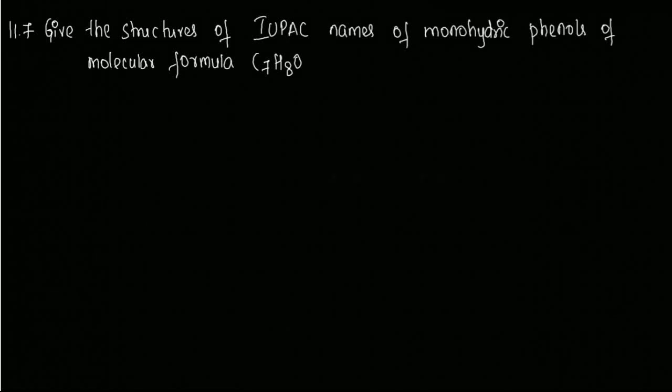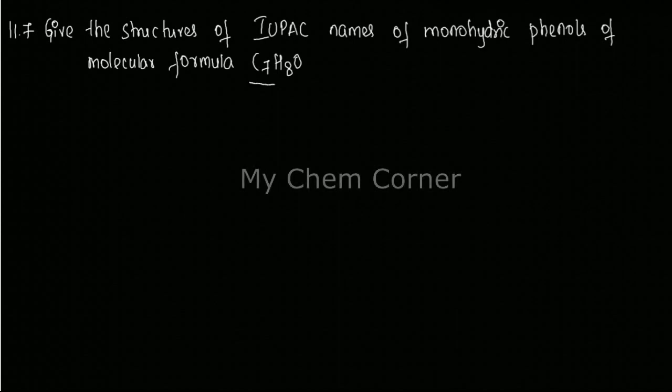Hello everyone, welcome back to My Chem Corner. In today's video, we're going to do question number 11.7 from the chapter on alcohols, phenols, and ethers. The question asks: Give the structures and IUPAC names of monohydric phenols of molecular formula C7H8O. There are two things here - the molecular formula is given.